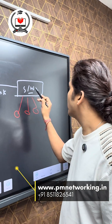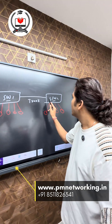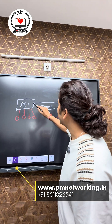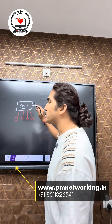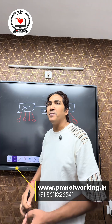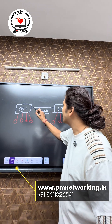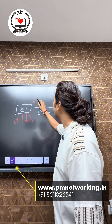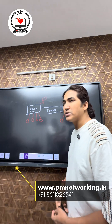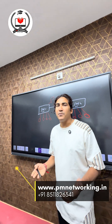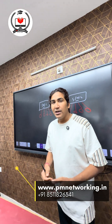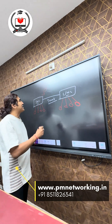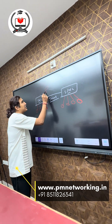On a trunk link, the switch will always perform tagging. Whenever switch one is going to send any traffic on this trunk link, it will add a tag value using dot1Q or ISL protocol.